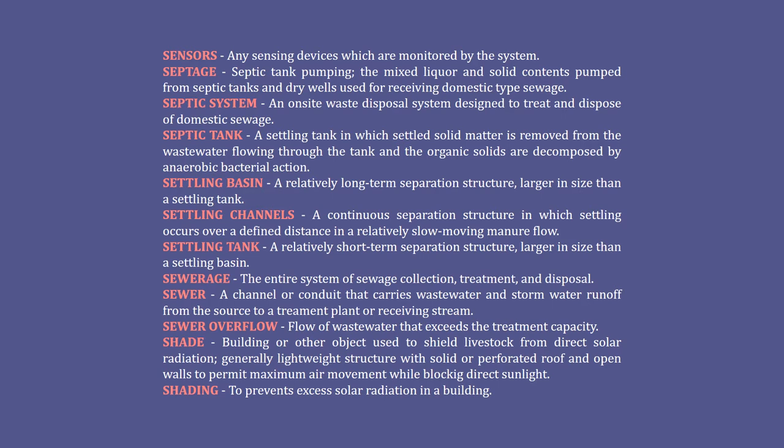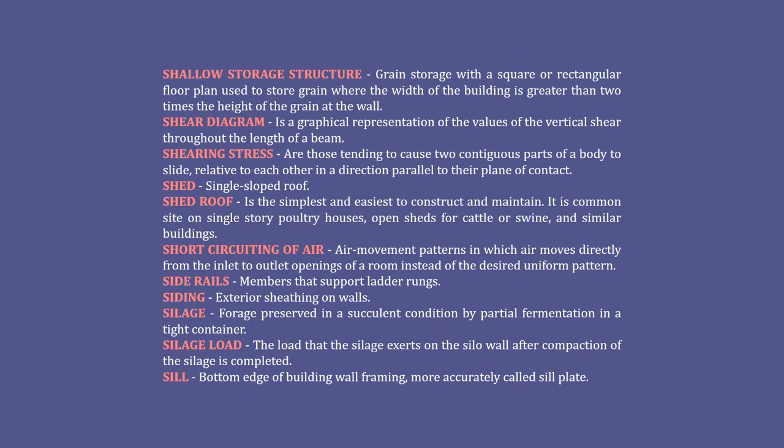Sewer overflow: flow of wastewater that exceeds the treatment capacity. Shade: building or other object used to shield livestock from direct solar radiation — generally a lightweight structure with solid or perforated roof and open walls to permit maximum air movement while blocking direct sunlight. Shading: to prevent excess solar radiation in a building. Shallow storage structure: grain storage with a square or rectangular floor plan used to store grain where the width of the building is greater than two times the height of the grain at the wall.